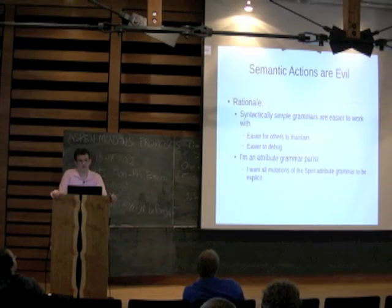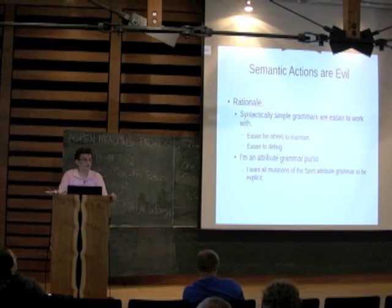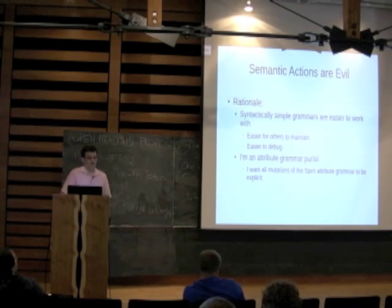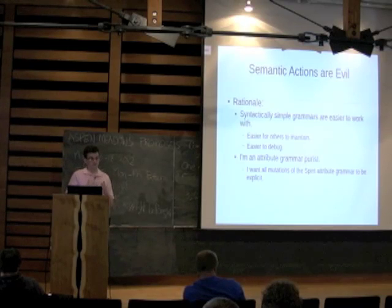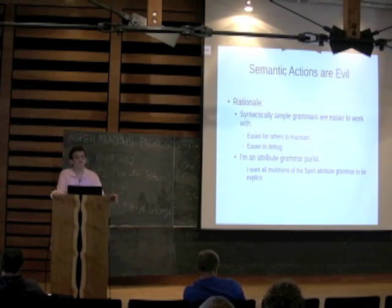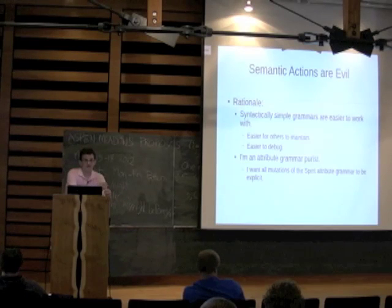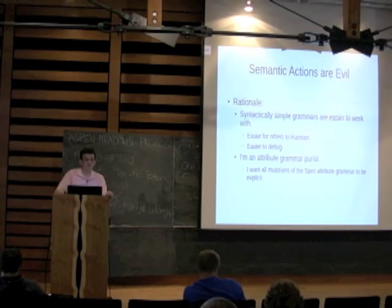Why do I want people to not use semantic actions? Because it makes it easier for people to maintain your grammar if the actual grammar portion is as readable as possible. I would rather have people write their semantics away from the actual DSL of Spirit, because I want the actual grammar to be as simple as possible to read. Also, I'm an attribute grammar purist — I'm very strong in the idea that if you're going to mutate the attribute grammar rules, you should have to do it explicitly.